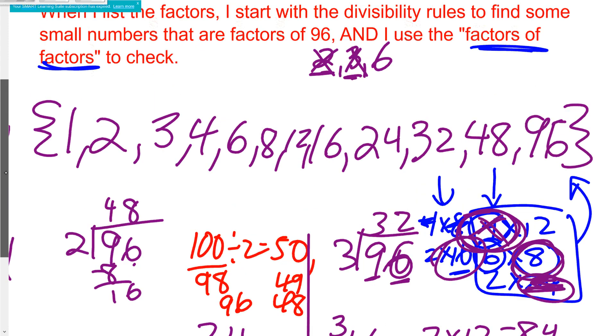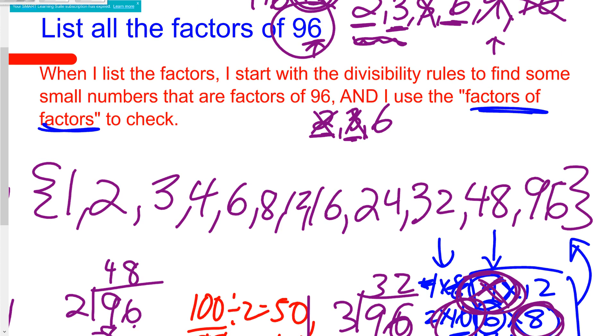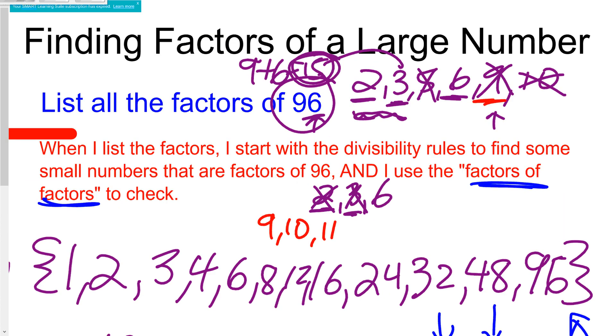Now I still have a few numbers in between 8 and 12: I have 9, 10, and 11. Now I already checked from my divisibility rules, remember we said 9 is not going to work, so 9 doesn't work. We checked 10 isn't going to work, and then I just think about the number 11. Well, 11 goes into 99, not into 96.